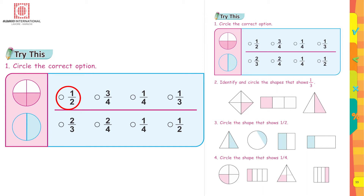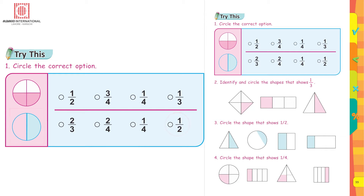Absolutely correct — one upon two, because half of the circle is colored and half is white. Similarly, in the next picture, look carefully: the answer is one upon two, because out of two parts one is blue and the other is pink, so the colored part is one upon two.